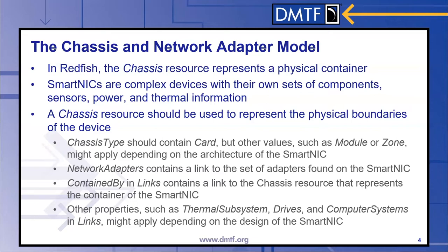Using the network adapters property within chassis, you can reference the set of embedded network adapters that get consumed by the host system within the SmartNIC. You would also use the "contained by" property within links to show the hierarchy of chassis nesting — this property would point up to the enclosure or bay that contains the SmartNIC. Other properties such as thermal subsystem, drives, computer systems, and links might apply for a given SmartNIC implementation, all depending on the capabilities of that device.